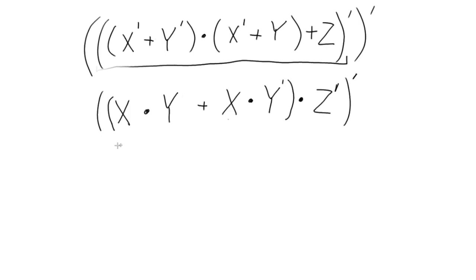Here we've got X·Y ORed with X·Y'. What this simplifies down to is just X. So that's this whole term right here, simplifies down to X.